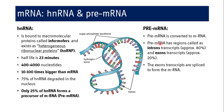Pre-mRNA has regions called introns and exons — intron transcripts and exon transcripts. Introns are approximately 80% of the total pre-mRNA structure, while exons are only 20%. The exon transcripts are spliced together to form mRNA.